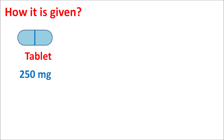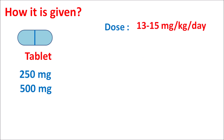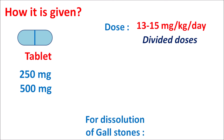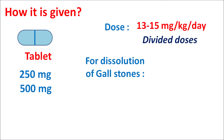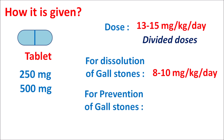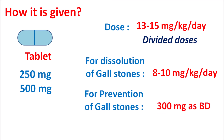This drug is available as tablets in strengths of 250 mg and 500 mg, with doses individualized based on patient conditions. For primary biliary cirrhosis, the dose is 13–15 mg/kg/day given in divided doses either twice or four times daily. For dissolution of gallstones, the dose is 8–10 mg/kg/day in divided doses. For prophylaxis and prevention of gallstones, 300 mg is given twice daily. Pediatric doses are individualized based on body weight.